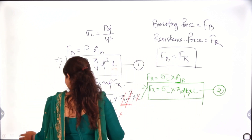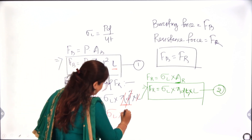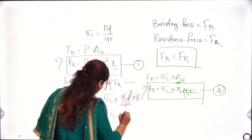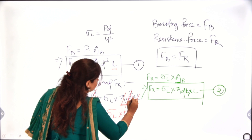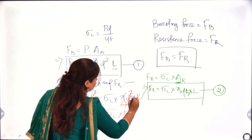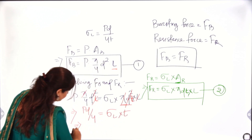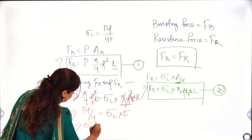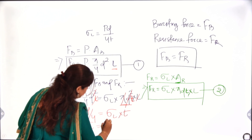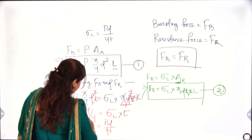We can cancel pi with pi. Our perimeter is pi D only. Cancelling D with D and L with L, we get P D upon 4 equals sigma L into T. Therefore, sigma L equals PD upon 4T. So we have proved what our longitudinal stress formula is.